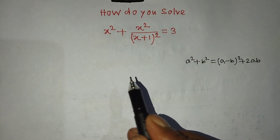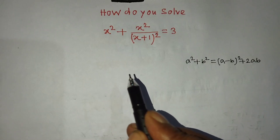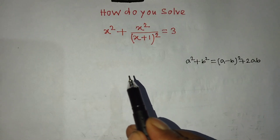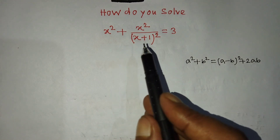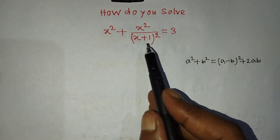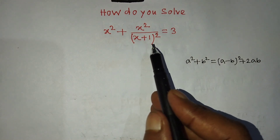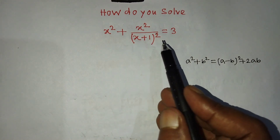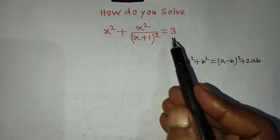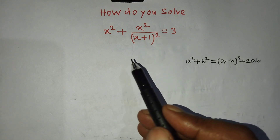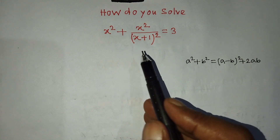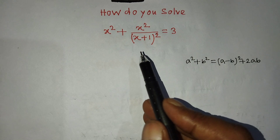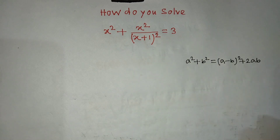Hi guys, welcome back to my channel, Alim Mass Vlog. Today our question is x squared plus x squared over (x plus 1) whole squared is equal to 3. Through this video I will tell you how to find the value of x from this equation.